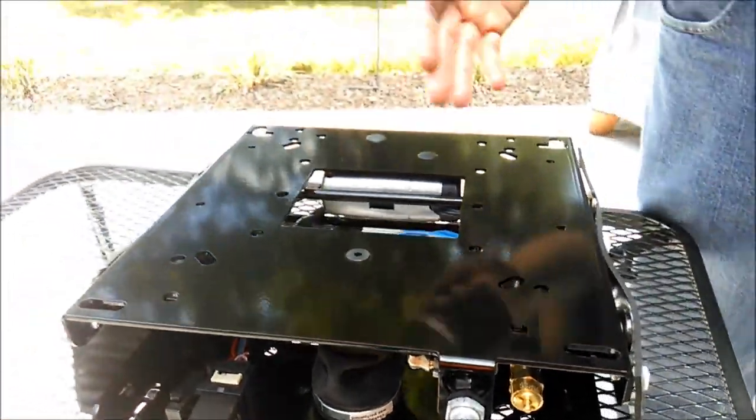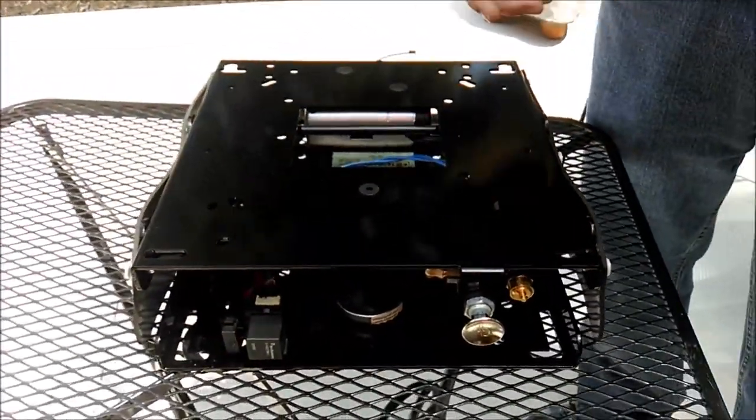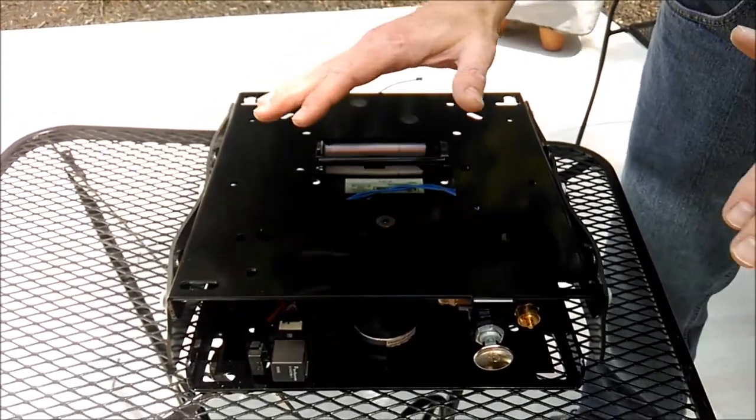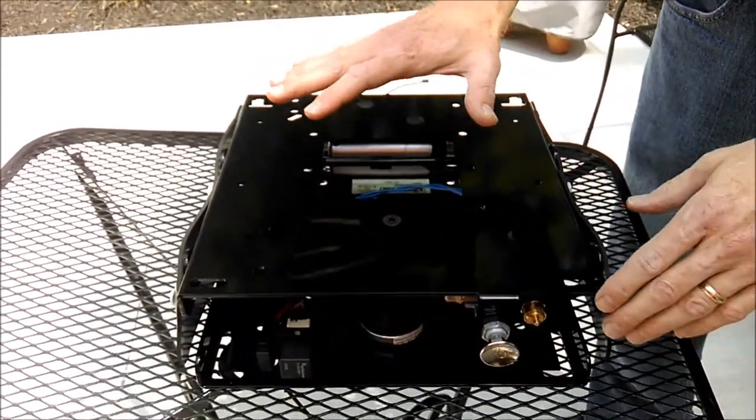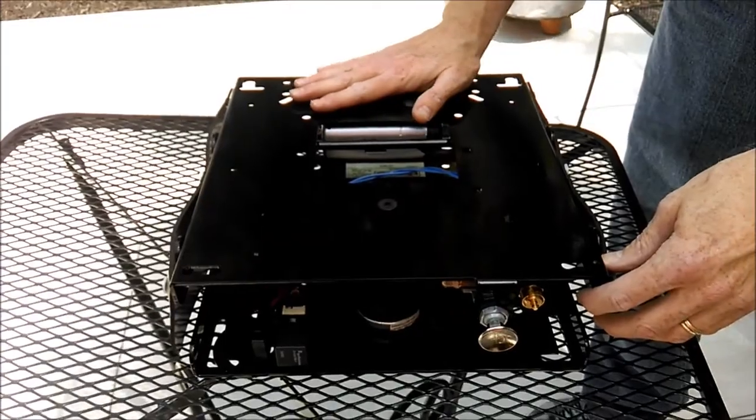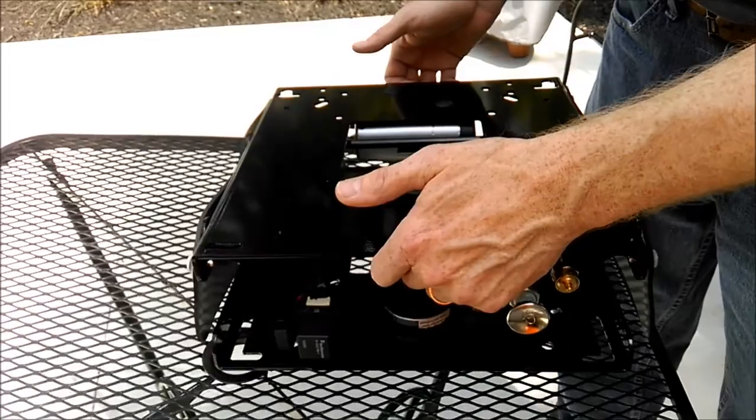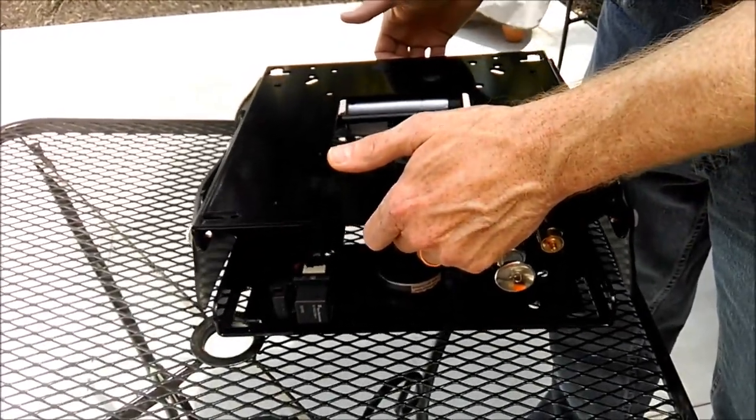Once you get it installed, make sure when you're installing it that you put it between the rails, the adjustment rails slides on your zero turn and the seat. The seat will go on top here by itself and then this will go on top of the rails so when you adjust, this should go back and forth with your seat as well.